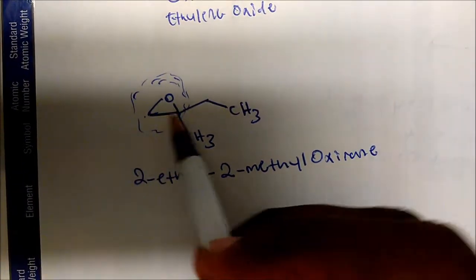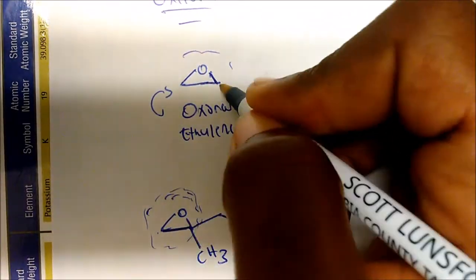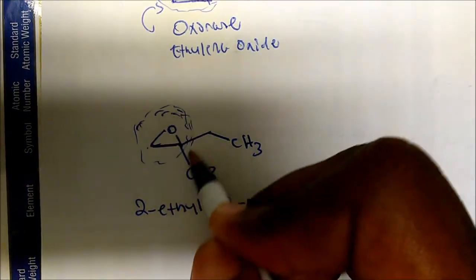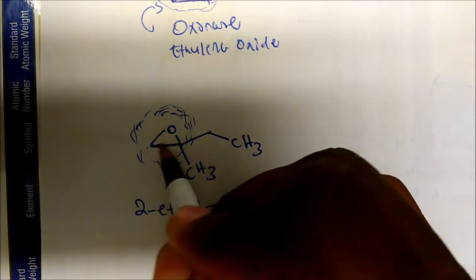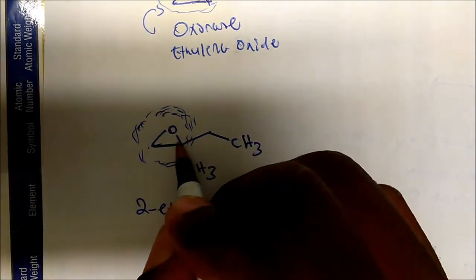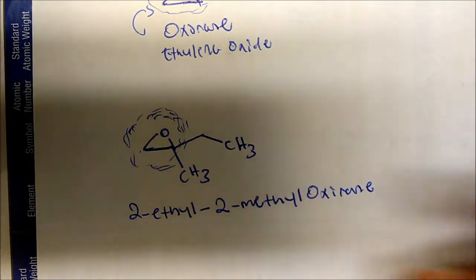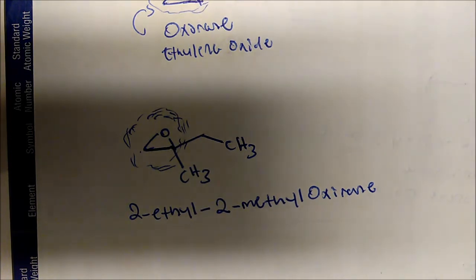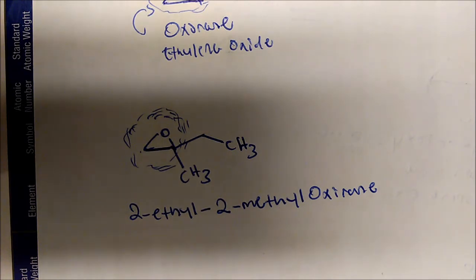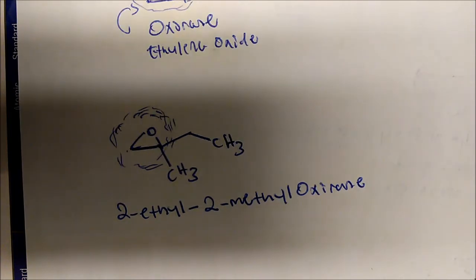Don't be confused about why we get the two — oxirane itself has two carbons, one and two. Labeling oxirane as the parent, on carbon two we have two different substituents. That's pretty much all there is to naming epoxides. There are many ways of going about naming these molecules, but that's the beautiful part about organic chemistry.